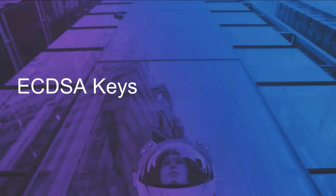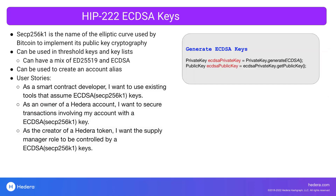Moving on to the next feature — support for ECDSA keys. This one's pretty straightforward. If you're used to generating ED25519 keys using the SDKs, it's pretty similar. You just do private key generate and then you can generate this key type. You have the option to create keys and key lists in Hedera using the ECDSA key, or you can do a mix of ECDSA keys and ED keys together. You can use either of these key types, as discussed in the previous feature, to create an account alias.